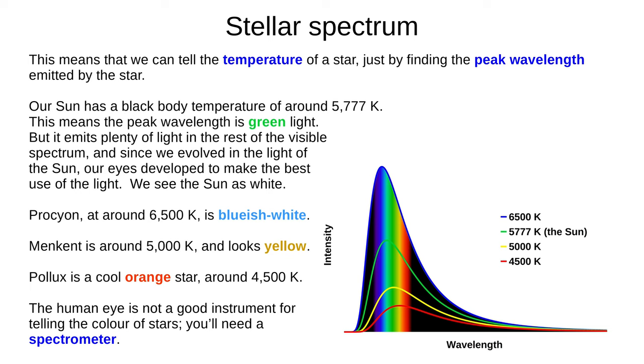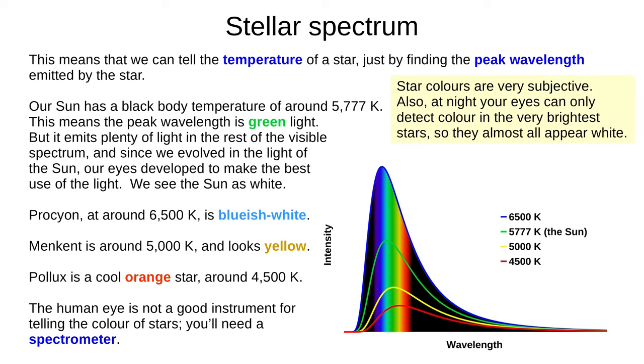This graph shows the emissions of our sun, as well as Procheon, which at around 6,500 Kelvin looks bluish white, Menkent around 5,000 Kelvin and glowing yellow, and the cool orange Pollux at 4,500 Kelvin. These colours are quite subjective, and most stars in the nighttime sky aren't bright enough for us to detect their colour. Almost all of them appear white. To really see the colour of stars, you'll need a spectrometer.